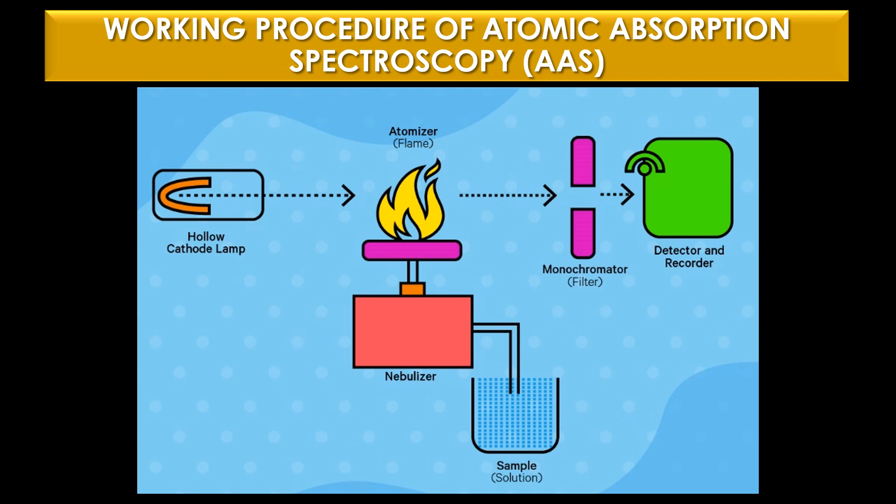Working procedure of atomic absorption spectroscopy: The sample, either liquid or solid, is atomized in a flame or a graphite furnace. The free atoms are then exposed to light — typically produced by a hollow cathode lamp — and undergo electronic transitions from the ground state to excited electronic states. The light emitted by the lamp corresponds directly to the wavelength absorbed by the atomized sample. A monochromator is placed between the sample and the detector to reduce background interference, and the detector then measures the intensity of the light beam and converts it to absorption data.